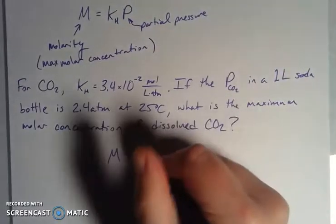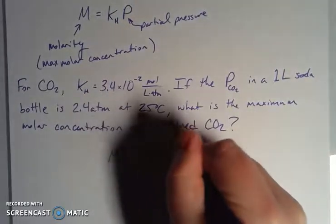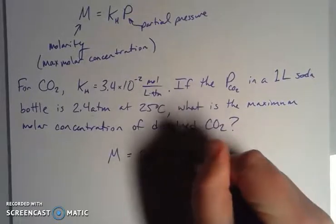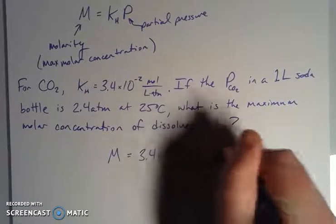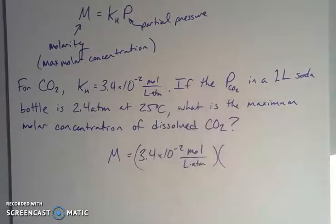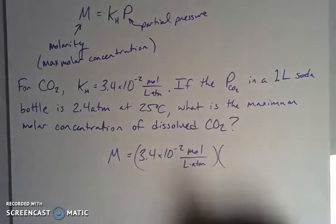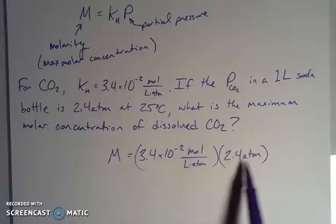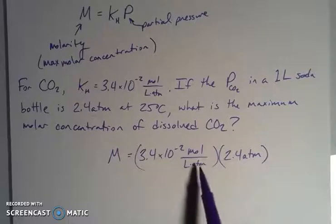So I can just put in my 3.4 times 10 to the negative 2 moles per liter atmosphere and multiply that by my pressure, my 2.4 atmospheres.